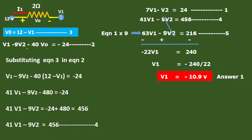Now we substitute equation 3 into the second equation. Instead of V0, we write (12 minus V1), giving V1 minus 9V2 minus 40(12 minus V1) equal to minus 24. There is already 1 V1, so we get 41V1 minus 9V2 minus 480 equal to minus 24. Therefore, 41V1 minus 9V2 equals 456. This is our fourth equation.